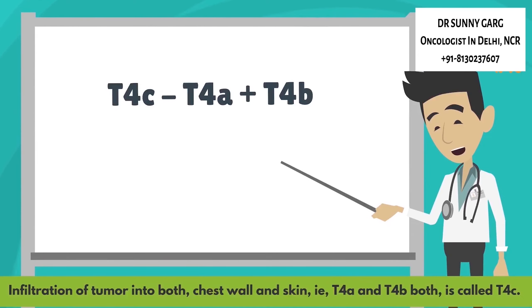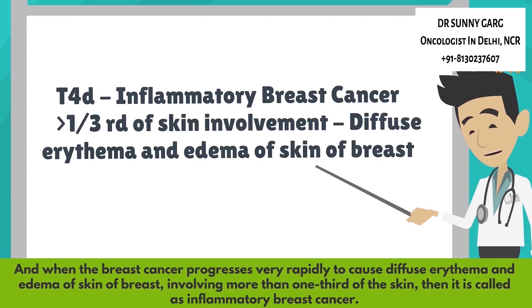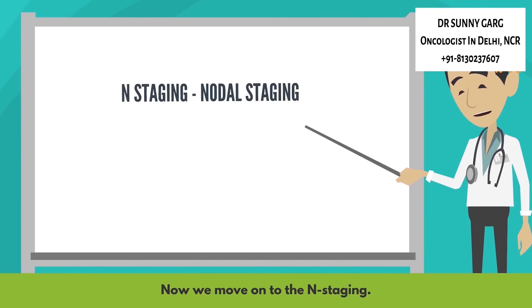Infiltration of the tumor into both chest wall and skin — that is both T4A and T4B — is called T4C. And when the breast cancer progresses very rapidly to cause diffuse erythema and edema of skin of the breast involving more than one third of the skin, then it is called inflammatory breast cancer.